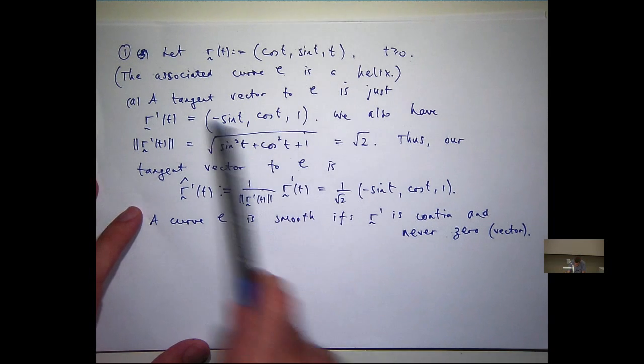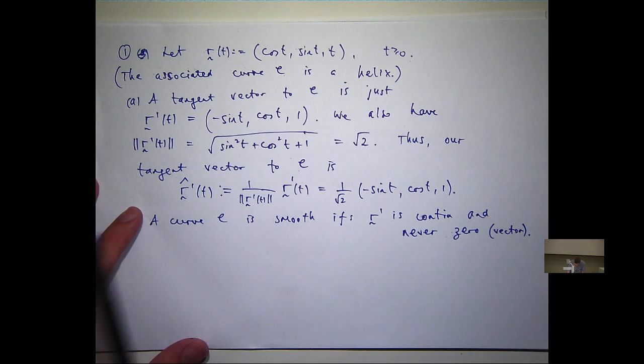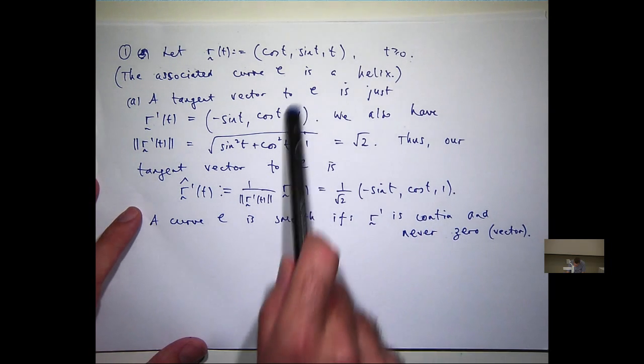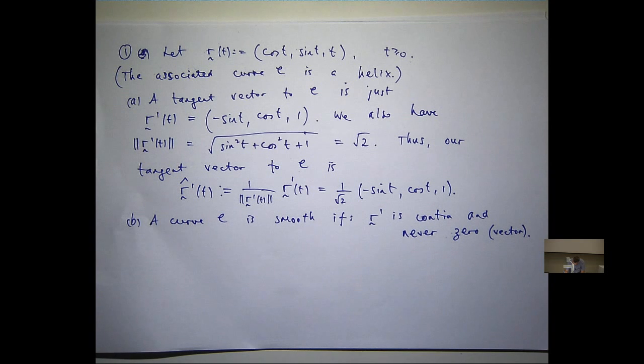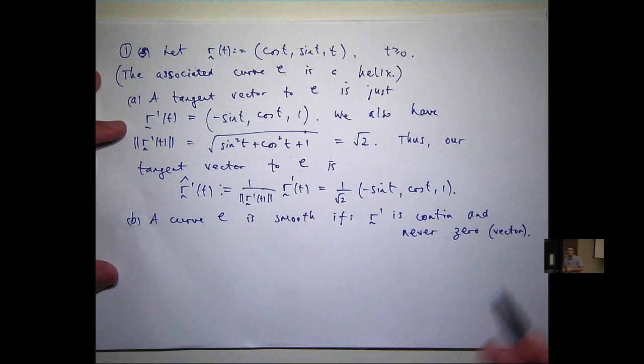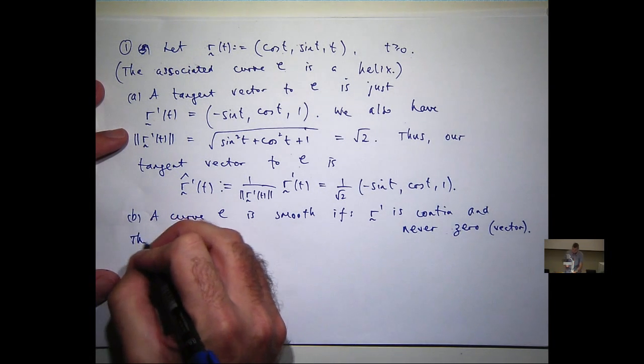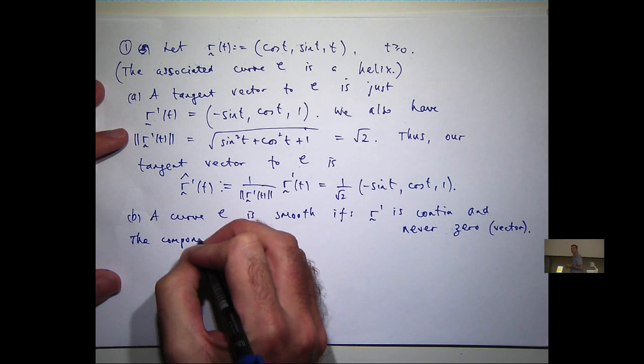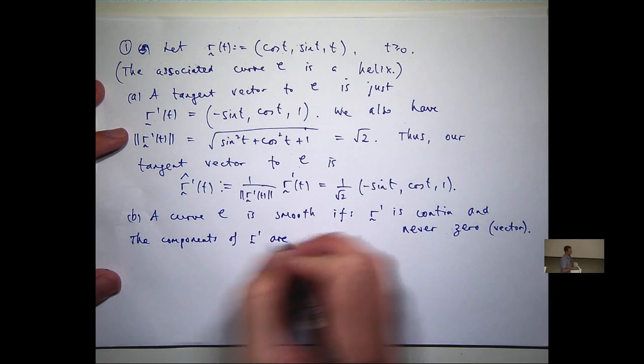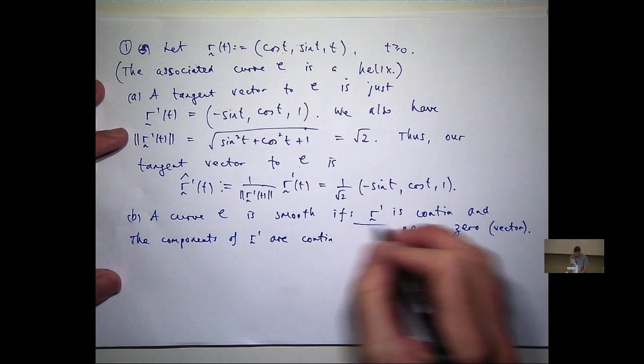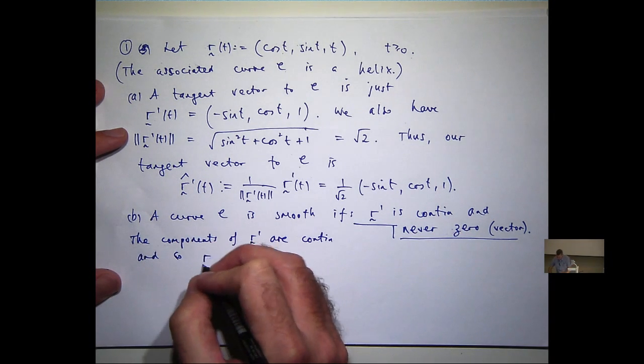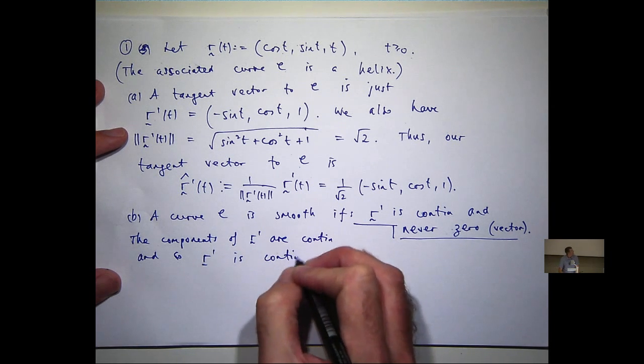Is this ever the zero vector? No, why not? Because its magnitude is root 2. So it's quite easy to show from part A that our curve C is smooth. So let's just put that into words. Now of course, you don't have to write all of this down in the exam. What I'm trying to do here is give you some solutions, but also explain what I'm doing in a little bit more detail.